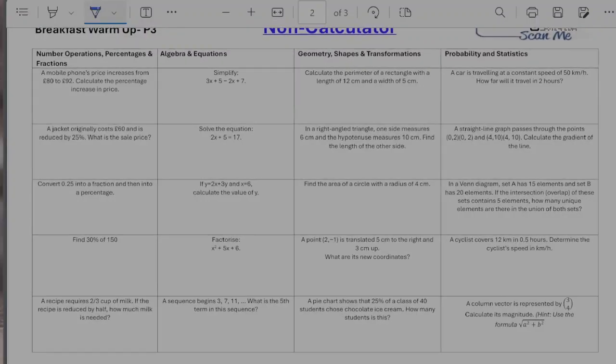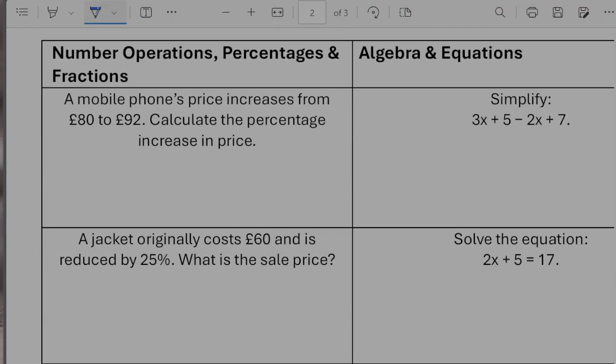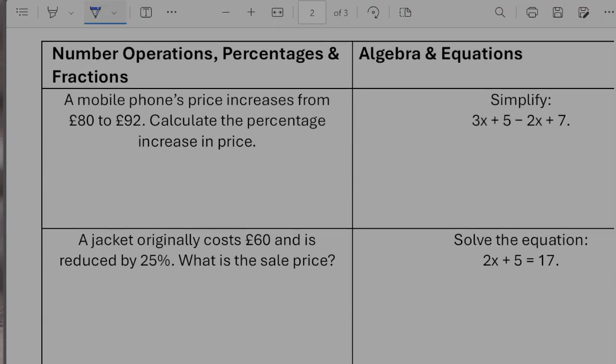Okay, so I'll do this a row at a time. So if we zoom in so we can actually see a bit better. So question one, a mobile phone price increases from £80 to £92. Calculate the percentage increase in the price.